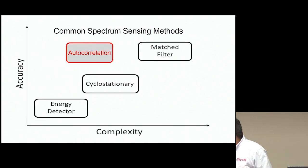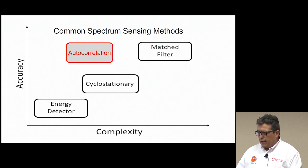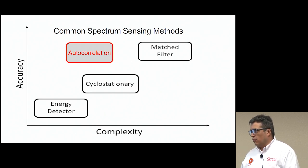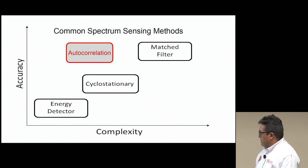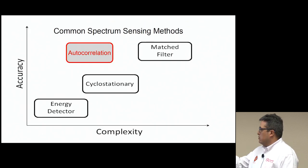These are some common spectrum sensing methods. Remember that spectrum sensing is basically a task performed by cognitive radios to determine if there is a primary user or not, so the channel can be used by a secondary user. The simplest one is the energy detector. We have also the matched filter, the cyclostationary detector, and the autocorrelation.